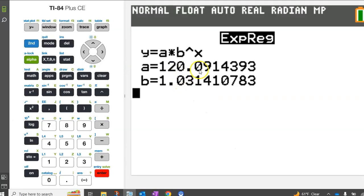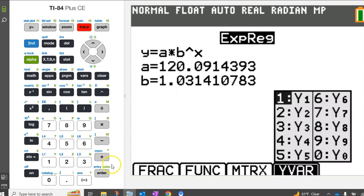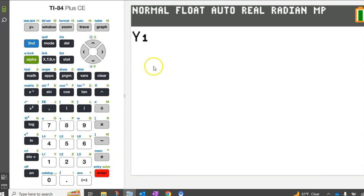Since we stored this regression model as Y1 on the calculator, we need to evaluate Y1 at 15. You can pull up Y1 by hitting alpha, trace, enter. You can evaluate at 15 by putting 15 next to it in parentheses and hitting ENTER.